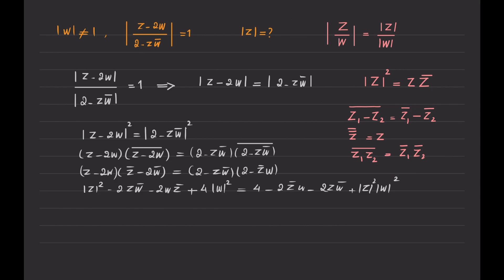After cancellation, I move all remaining terms to the left-hand side: absolute value of z squared plus 4 times absolute value of w squared, minus absolute value of z squared times absolute value of w squared, minus 4 equals 0.